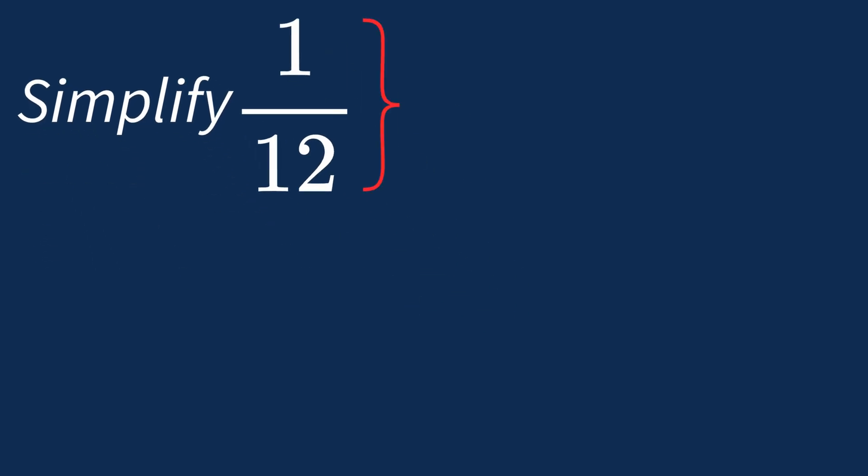When simplifying a fraction like 1 over 12, the first step is to check if there's a common factor between the top number, the numerator, and the bottom number, the denominator.